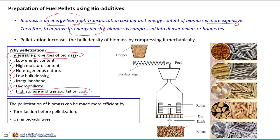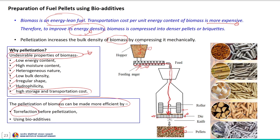Once the material is converted into a pellet, it ultimately increases its energy density, because the palletization process reduces moisture content to 7 to 10 percent from the original moisture content of around even 40 percent. Pellets produced from raw biomass sources show high energy content. This schematic represents the palletization process: a hopper feeds the raw material into the palletization chamber where raw forms of biomass are converted into pellets. The palletization of biomass can also be made more efficient by torrefaction of the biomass before palletization or by using bio-additives.